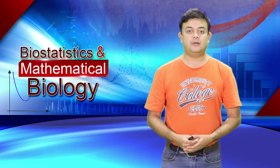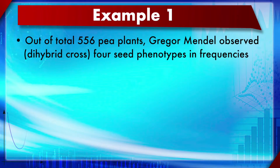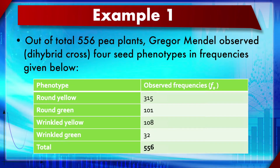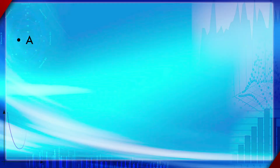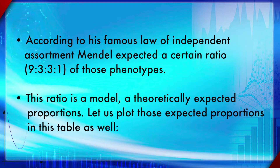Let's look at an example. Out of 556 plants, Gregor Mendel observed four seed phenotypes in his famous dihybrid cross study: round, wrinkled, yellow, and white. The observed frequencies for these four seed morphological patterns are given. We already have fo. Now we need to calculate fe, because Mendel theorized the expected frequency falls in a 9:3:3:1 ratio, as stated by the law of independent assortment.